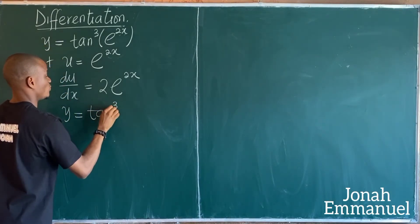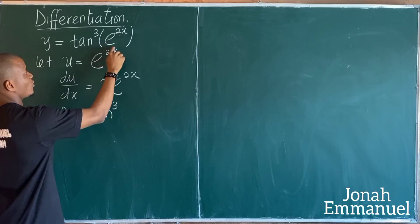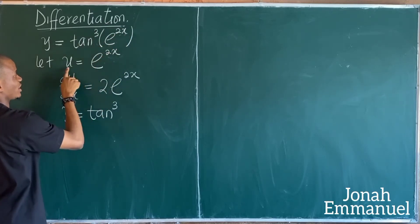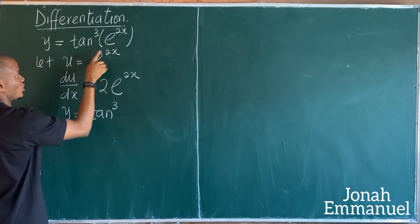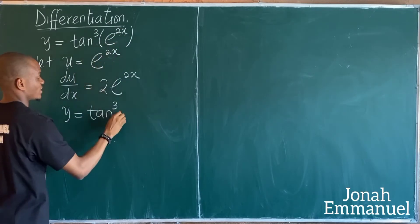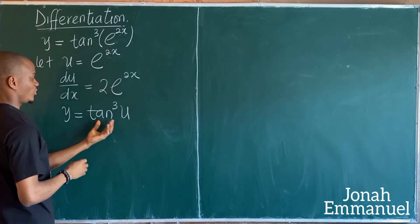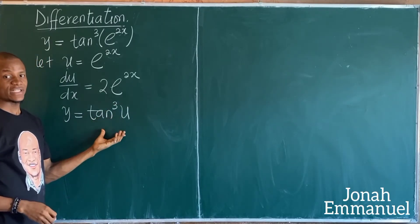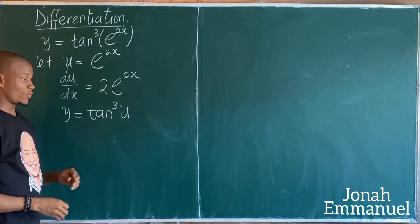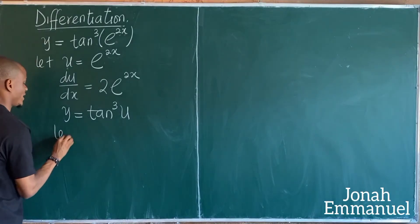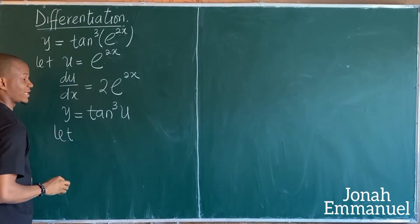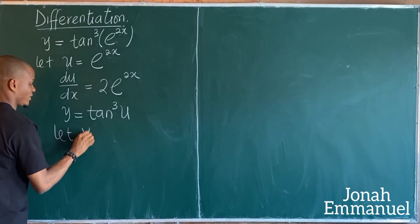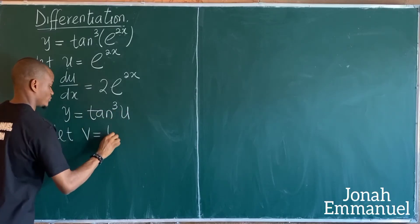That means y is now equal to tan cubed of exponential 2x, which we call tan cubed u. But this is not in its simplest form, so I'll use another alphabet. Let v be equal to tan u.